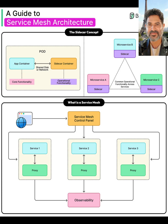The proxies attached to each service form the data plane, handling actual request traffic between service 1, service 2, service 3, and others. A service mesh control plane configures these proxies with policies for routing, traffic splitting, mTLS, and access control, allowing platform teams to manage behavior centrally through declarative configs or APIs.